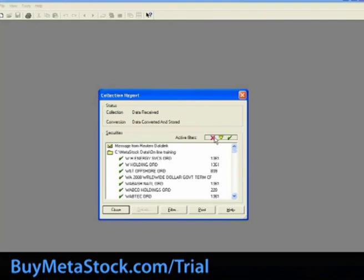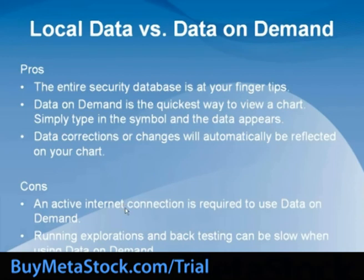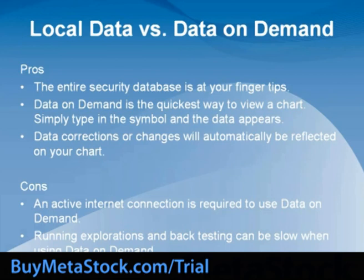Please contact MetaStock Support for help troubleshooting any download problems. There are two types of data that MetaStock can use to plot charts. The first is local data, which is stored to your hard drive and must be updated each night with new prices using the downloader. The second is data on demand, which uses the internet to pull data into MetaStock to populate a chart on demand. The pros of data on demand are that the entire security database is at your fingertips, it is the quickest way to view a chart — simply type in the symbol and the data appears — and data corrections will automatically be reflected on your chart. The cons are that it requires an active internet connection, and running explorations or backtesting can be slow when using data on demand.